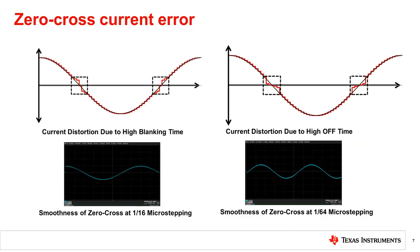To avoid high-side FET turn-on switching noise coupling to the current sense circuit, stepper motor drivers start to sense the output current after a blanking time. A high current sense blanking time could cause the average current to be significantly higher than the intended value near the zero-crossing section. On the other side, a too-long PWM off time could cause the average current to be significantly lower than the intended value near the zero-crossing section. This distortion creates an unsmooth current waveform, which leads to wobbling, vibrations, and audible noise. TI devices can support down to one microsecond current sense blanking time, and different PWM off time options to give respectively smooth current around zero-crossing.